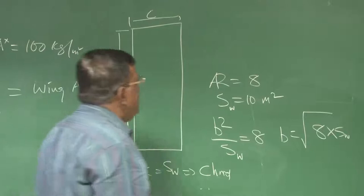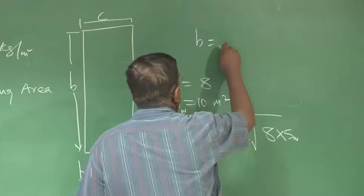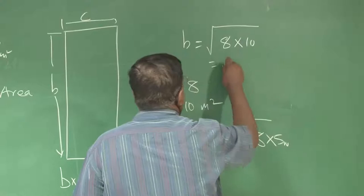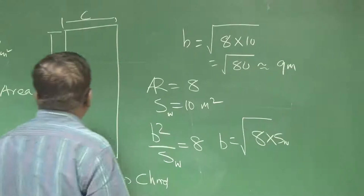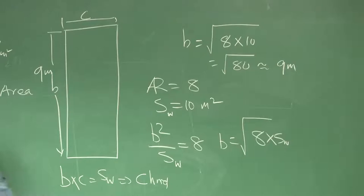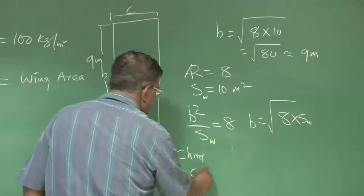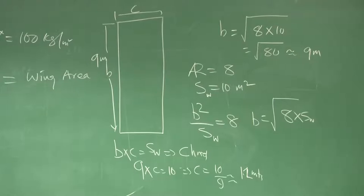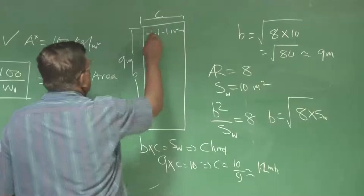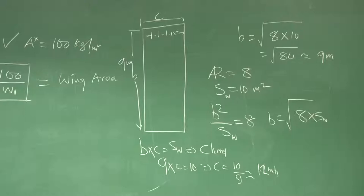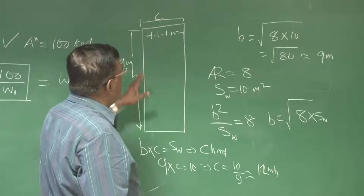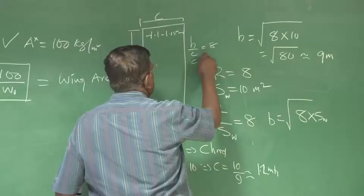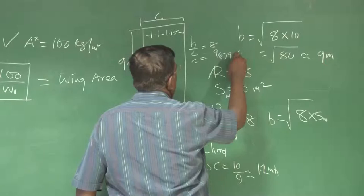Taking this number: B will be the square root of 8 into 10, that is the square root of 80, which is around 9 meters. So span is 9 meters, and 9 into C equals 10, which implies C equals 10 by 9 — that is around 1.1 to 1.2 meters, roughly 1.15 meters. You can also cross-check: for a rectangular wing, aspect ratio is also B by C, so C equals B by 8, giving approximately 1.1 meters. This is the typical configuration.